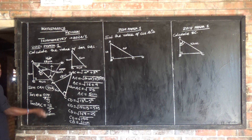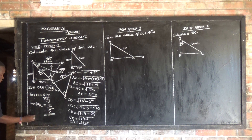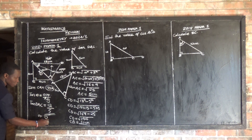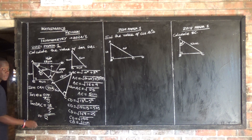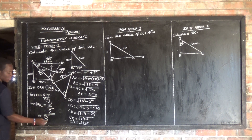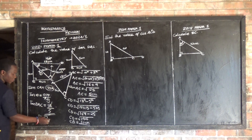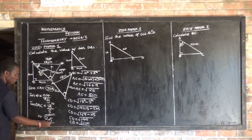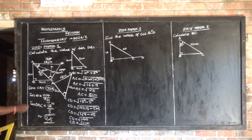So this is our answer. Let me divide it through. 5 into 12: 5 goes 2 times, remainder 2. Then 5 into 10 is 2. So TAN DAC equals 2.4.